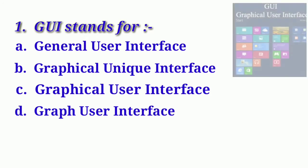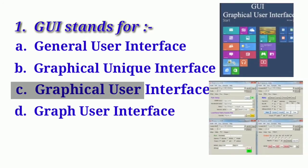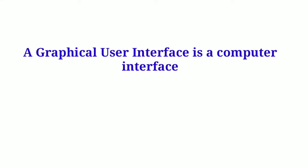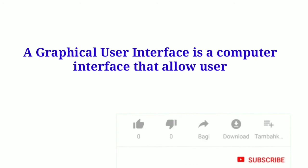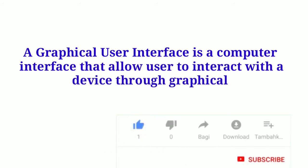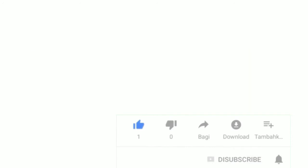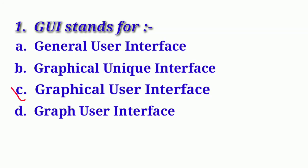GUI stands for Graphical User Interface. A graphical user interface is a computer interface that allows users to interact with a device through graphical elements such as pictures and animations. So our correct option is Option C: Graphical User Interface.